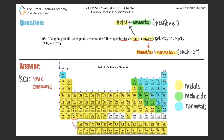NCl3: nitrogen and chlorine. Nitrogen is a nonmetal — it's in the blue category — and chlorine is also a nonmetal in the blue category. Since they're both nonmetals, NCl3 is a covalent compound, meaning the electrons would be shared.